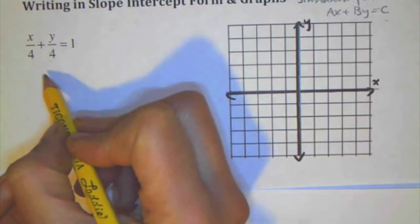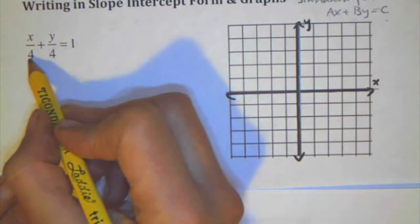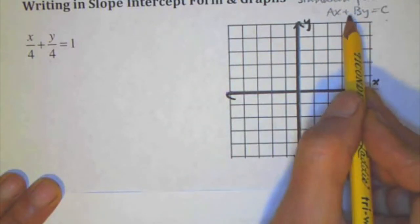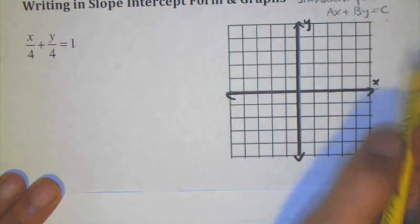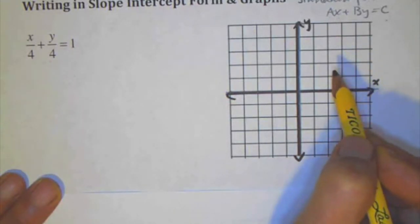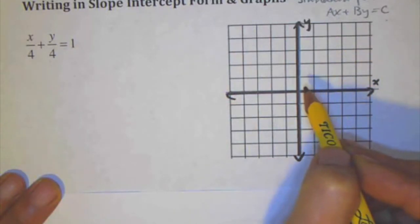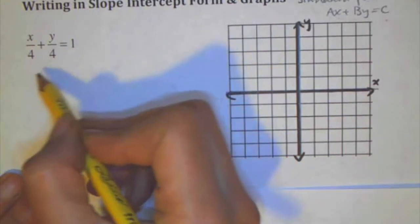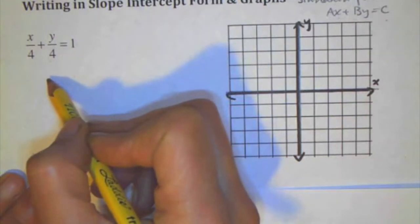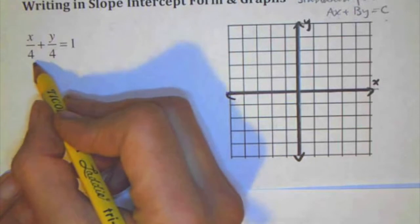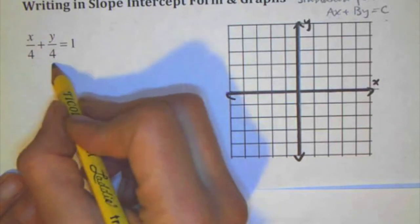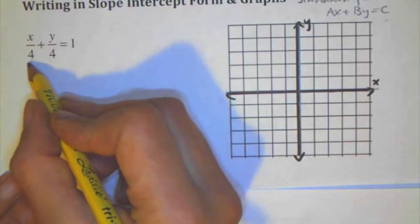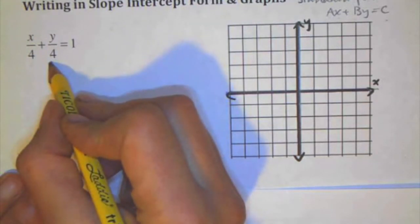So it looks a little bit like standard form. The nice thing about standard form when it's in this form is it's easy to get the x and y intercept. Once you have the x and y intercept, those are two points, and when you have two points, you can easily graph a line. Now one of the things is if we wanted to write this in standard form or kind of move it towards slope intercept form, it's really kind of a pain to have these denominators.